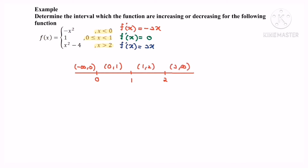The values 0, 1, and 2 are not included. Now suggest a test value of x for each interval: for negative infinity to 0, use x = negative 1; for 0 to 1, use x = 0.5; for 1 to 2, use x = 1.5; and for 2 to infinity, use x = 3.